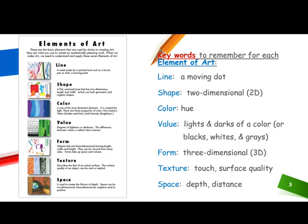Line: a mark made by a point tool such as a brush, a pen, or stick — a moving point. Shape: a flat, enclosed area that has two dimensions — length and width. Artists use both geometric and organic shapes.